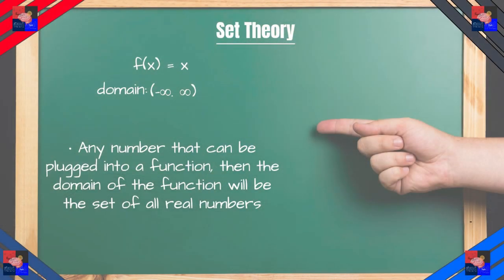So any number that can be plugged into a function would have the domain of that function be the set of all real numbers. As seen here, y equals x, and the domain will be the set of all real numbers, which is negative infinity through infinity. And these are written as parentheses because it implies non-inclusivity. We can never ever reach to infinity, but we can get very close. So this is basically saying it's in between infinity and negative infinity, but negative infinity and infinity are not part of the set.